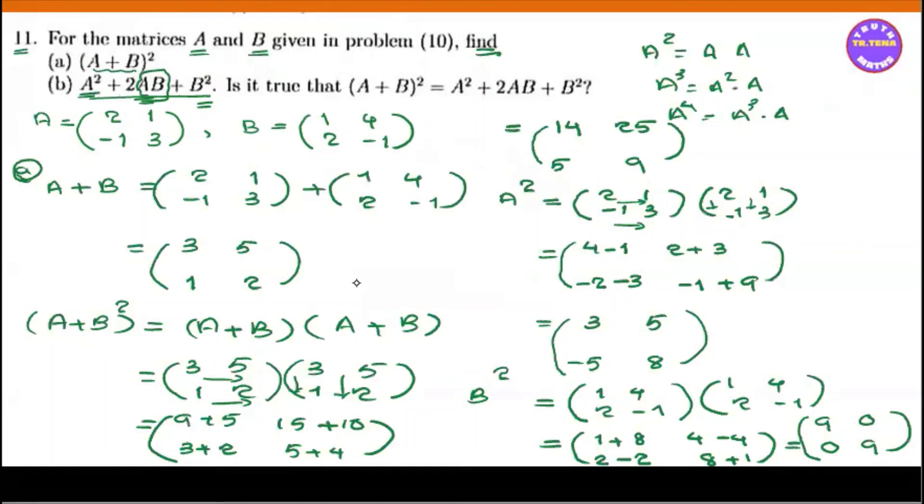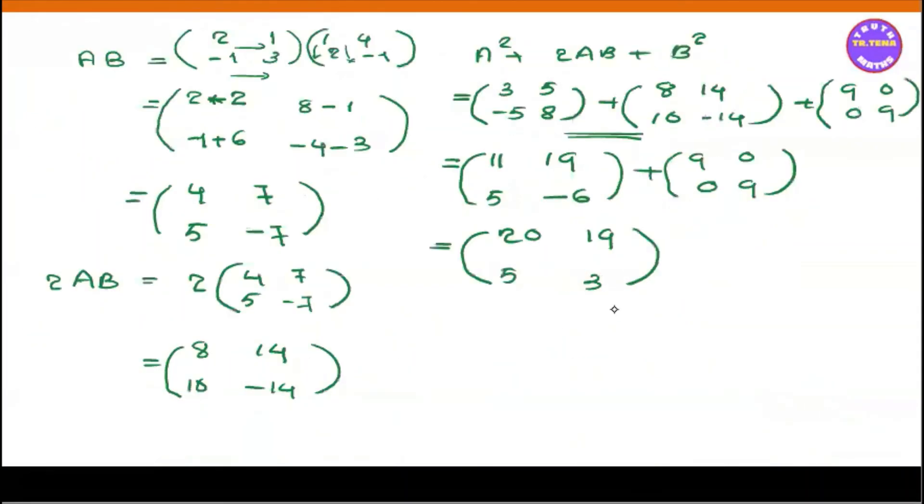So this is A plus B the whole square. A plus B the whole square is 14, 25, 5, 9. This means A plus B the whole square is not equal to A square plus 2AB plus B square.